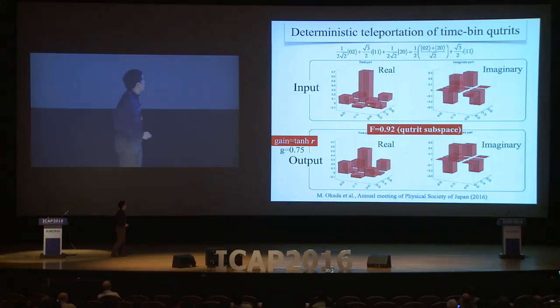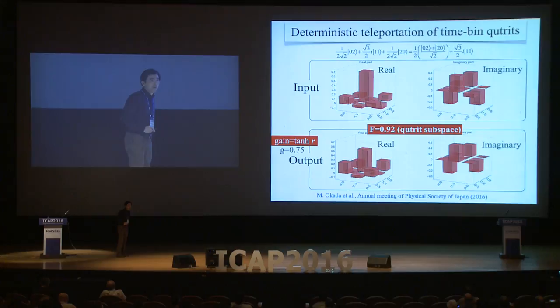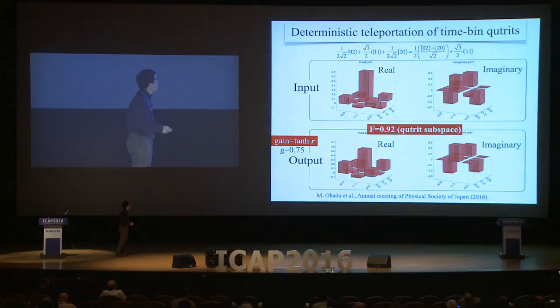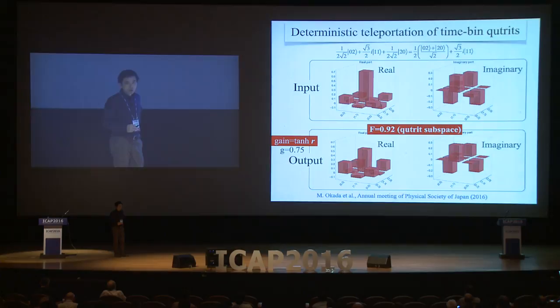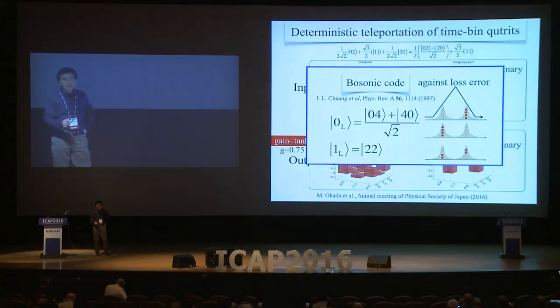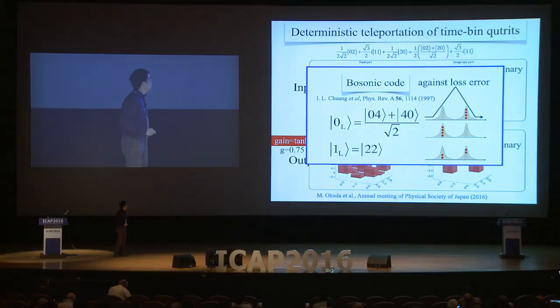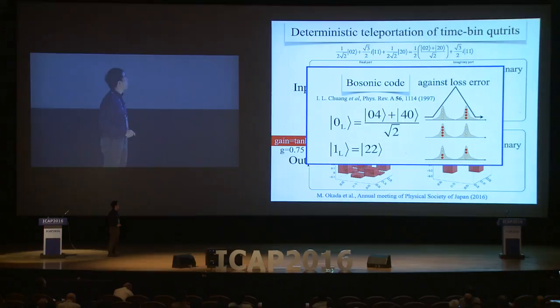This is our time-bin qutrit. It is a superposition of |0,2⟩, |1,1⟩, and |2,0⟩. This is a sort of qudit-qubit encoding. We teleported this qutrit and got this state as teleportation output. The fidelity is rather high. The reason why we tried this experiment was that by using this technology we can make a bosonic code — an error correction code against loss errors — using the superposition of |0,4⟩, |4,0⟩, and |2,2⟩.